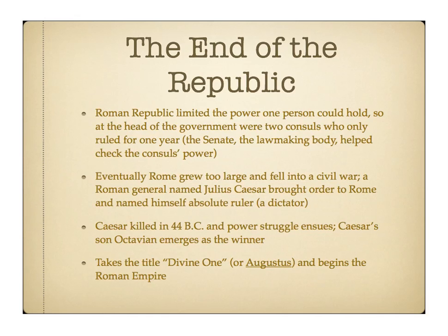One thing you need to know about Rome — even early on they really prided themselves on having a very strong military, and the military was good. Eventually, though, Rome just got too big. They grew too large, and because of different interests among different leaders, you saw civil war fall on Rome. In the middle of it, a general — a really charismatic guy named Julius Caesar — rose up, brought order to Rome, became a dictator, declared himself absolute ruler, and people loved him. The Senate did not, though. Remembering the whole balance of power, in 44 BC they murdered him.